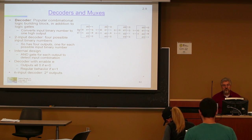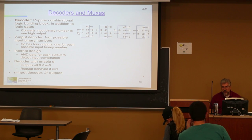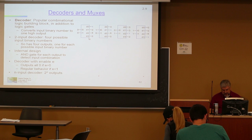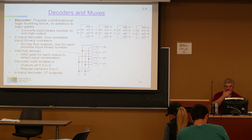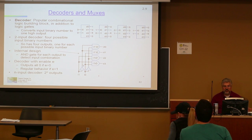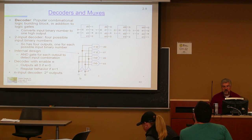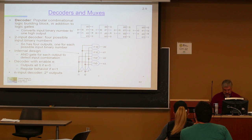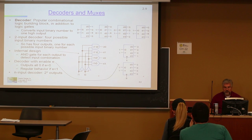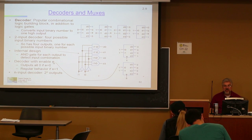When you have n inputs, you have 2 to the n outputs. So if you looked at what was inside, you will have literally this operation. You will have your input 0 and 1 — so 00, 01, 10, and 11. And sometimes you will also have an enable bit go in.